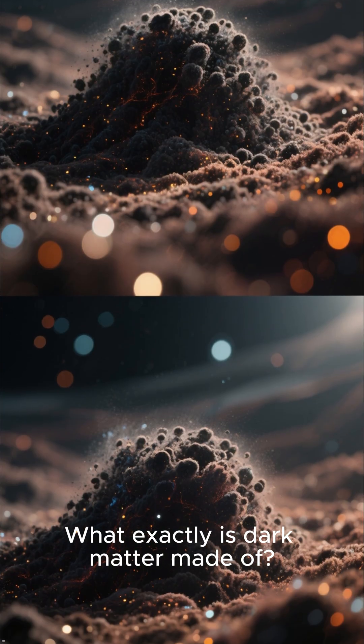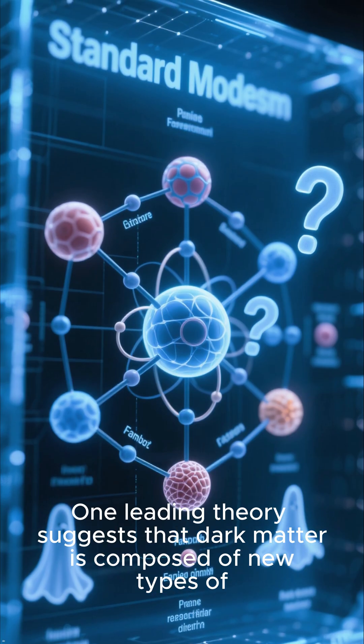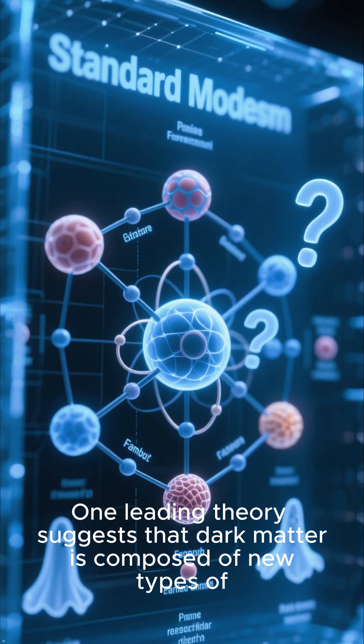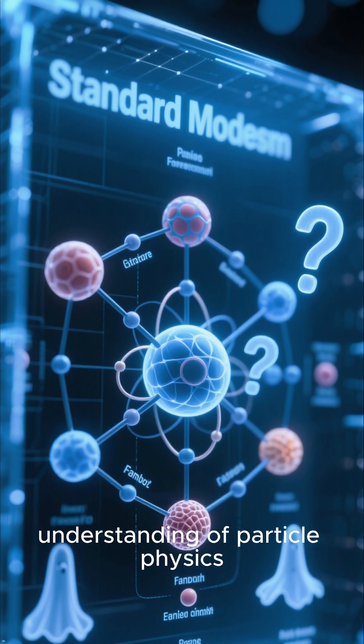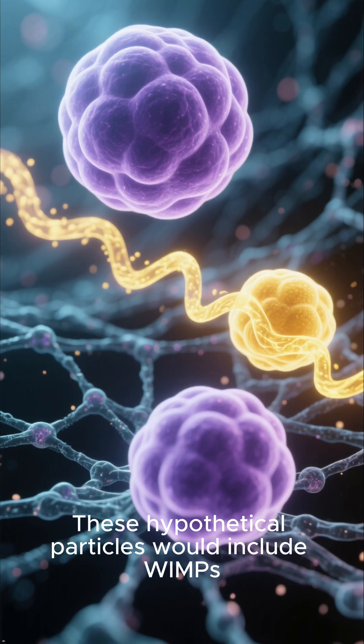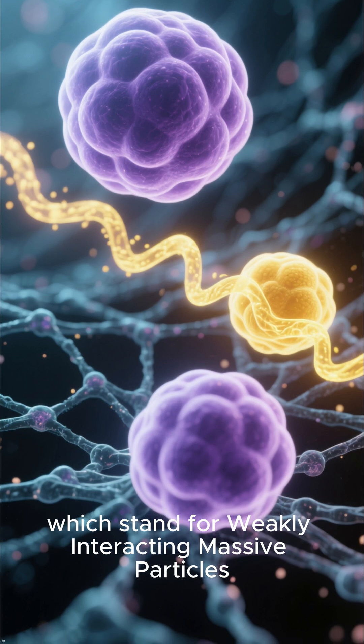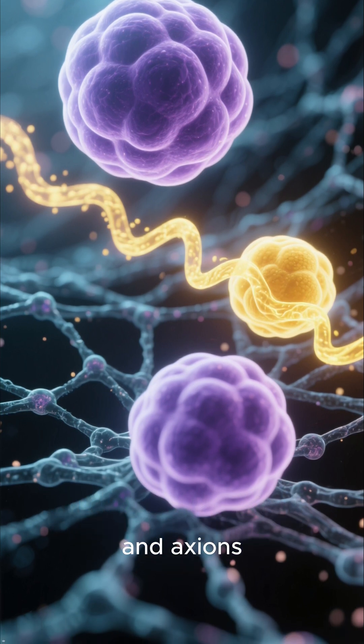Exotic particles or new physics. What exactly is dark matter made of? One leading theory suggests that dark matter is composed of new types of fundamental particles that don't fit into our current understanding of particle physics. These hypothetical particles would include WIMPs, which stand for Weakly Interacting Massive Particles, and axions.